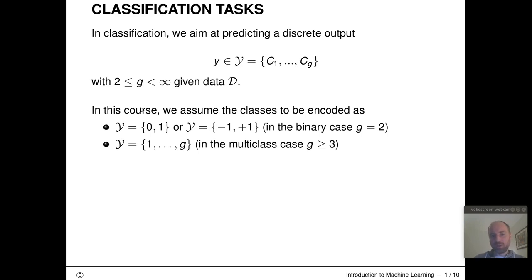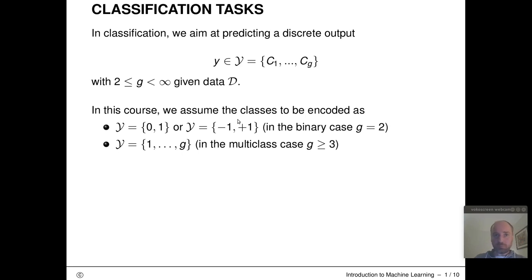To make things more convenient during notation and algorithmic construction, we will assume in this course that these G class labels are encoded as integer numbers. In the binary case, they come either from the set {0, 1} or from the label set {-1, +1}. We call +1 the positive class and 0 or -1 the negative class. Which of these notations is more convenient depends on how we want to mathematically define our specific classification algorithm.